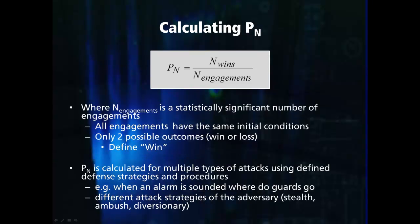The probability of neutralization can be calculated using the simple equation of the number of wins divided by the number of engagements. A meaningful value of PN requires that a statistically significant number of simulations are run for the same initial conditions. Before calculating PN, it is essential that a win is defined. For example, if the target is a denial target, the response force would only win if the adversary is neutralized before they reach the target. If the adversary reaches the target, even if it is not successfully stolen or sabotaged, it would not be a win. Simulations will need to be run for each combination of attack strategies and adversary equipment to ensure there is not a vulnerability in the response system.